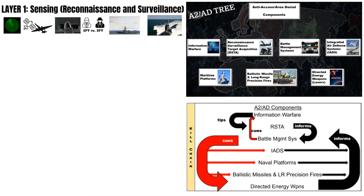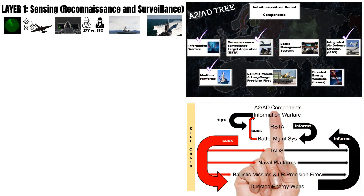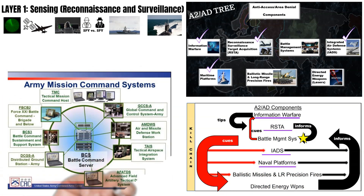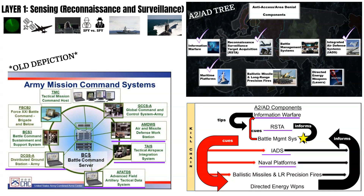Sensors are assets responsible for gaining and maintaining contact with enemy assets. These are encompassed by the categories of Information Warfare, RISTA, IADS, and Maritime Platforms. Information collected by these assets is sent to battle management processors like the U.S. Army Air and Missile Defense Workstation (AMDUS), the Tactical Airspace Integration System (TAEAS), the Advanced Field Artillery Tactical Data System (AFATIDS), or the Distributed Common Ground System Army (D6A).